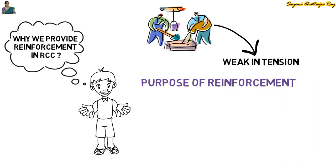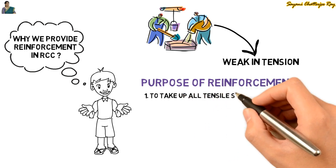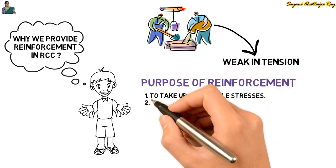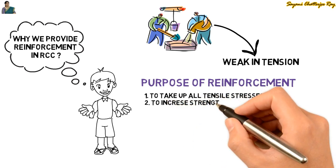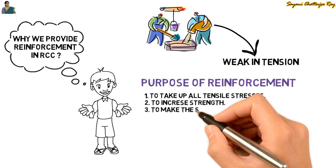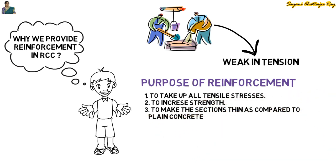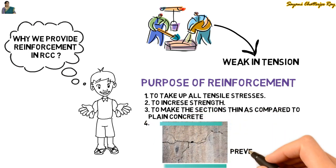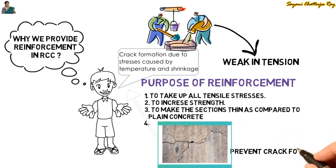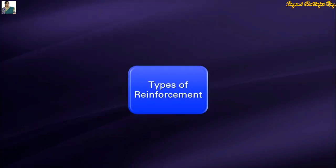Reinforcement is provided so that it takes up all the tensile stresses that are developed in the structure. Reinforcement is also provided to increase the strength of concrete sections, to make sections thinner as compared to plain concrete sections, and to prevent the formation of cracks developed due to temperature and shrinkage stresses. Now we will talk about the types of reinforcement commonly used in India.